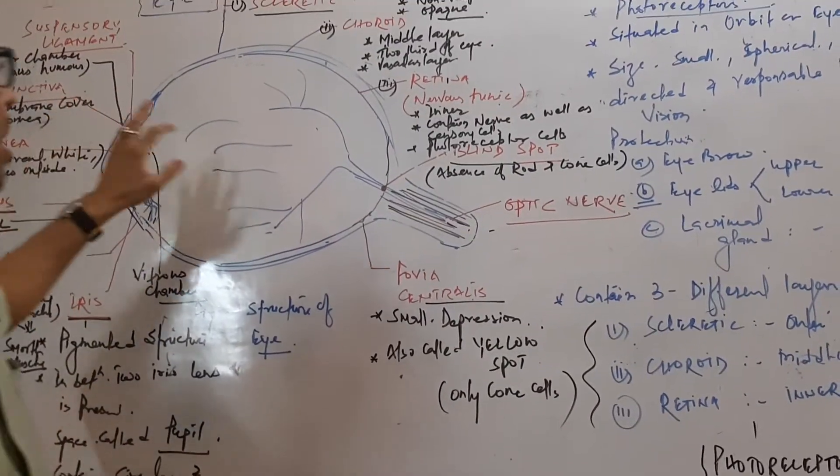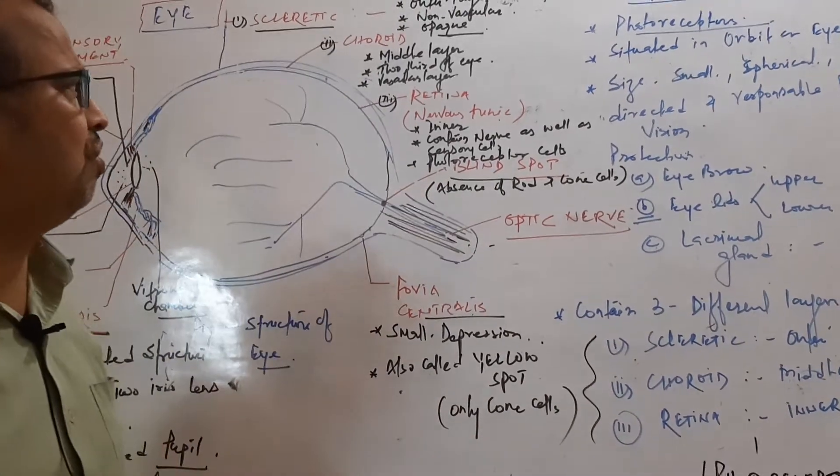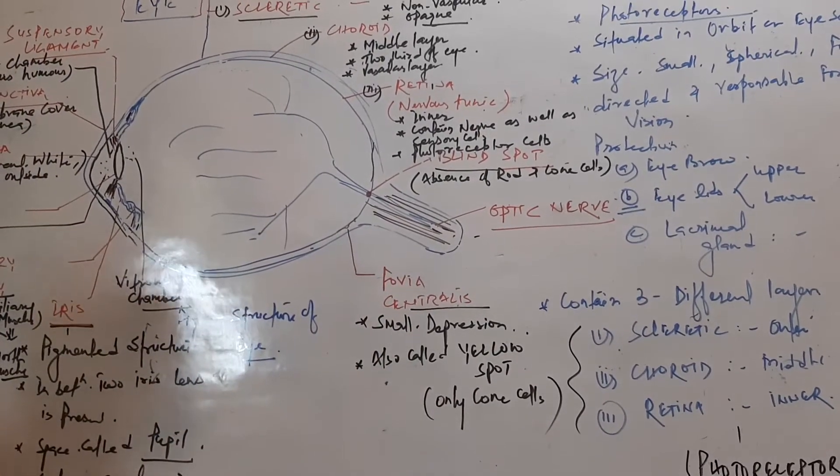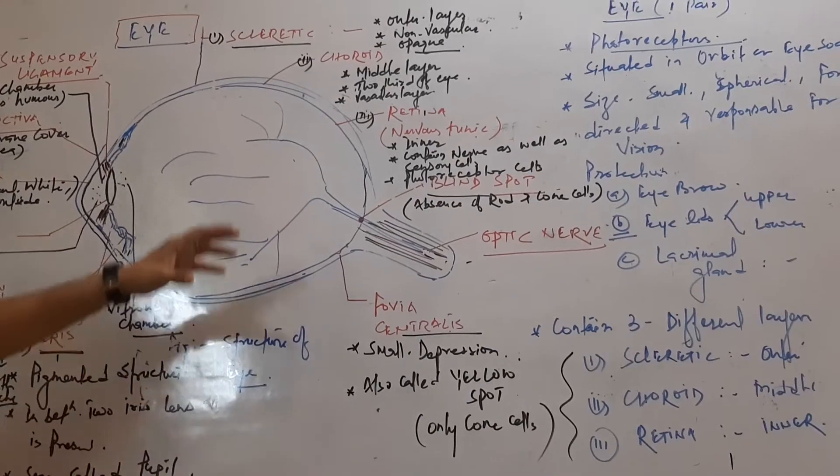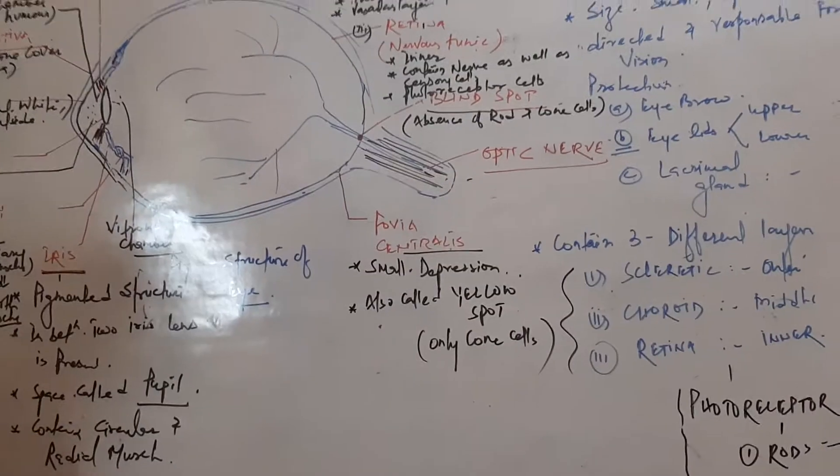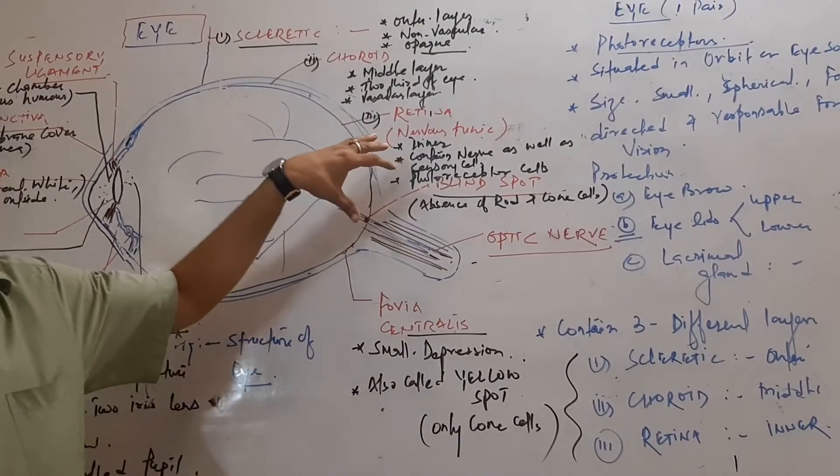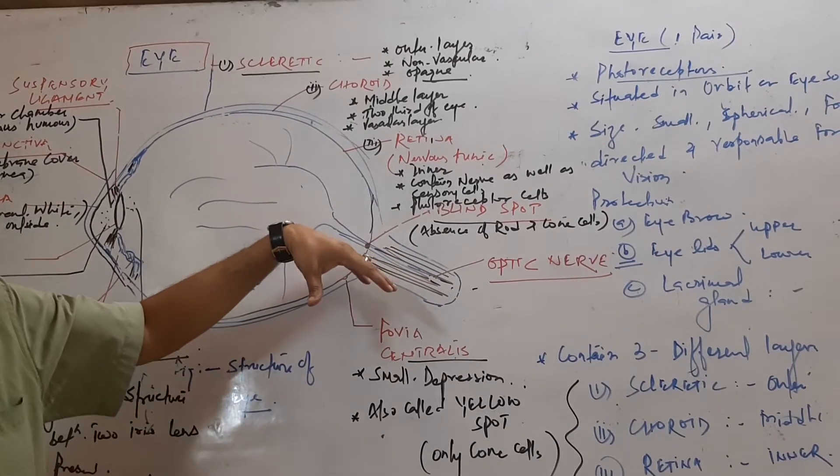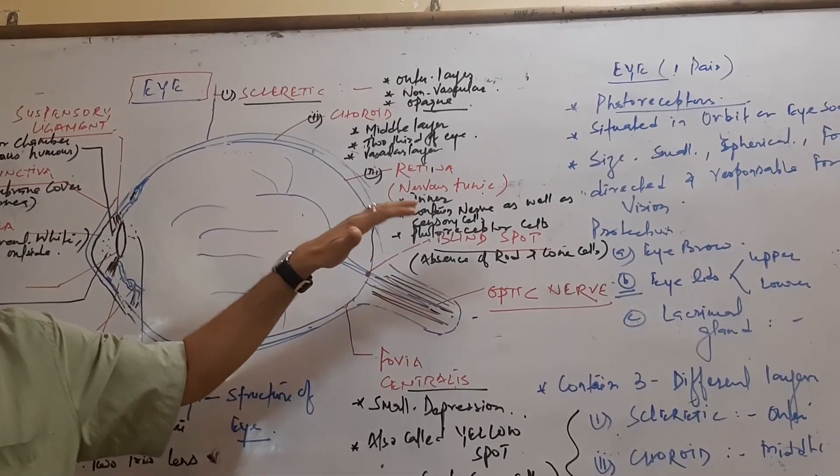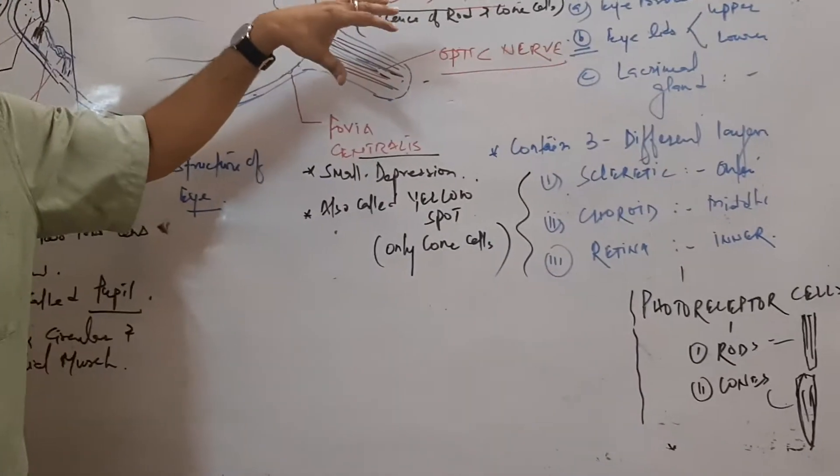Now we come to the inner structure, which is called retina. It is a nervous layer structure which contains both nerve as well as sensory cells, and also contains photoreceptor cells. There are two types of photoreceptor cells: rod cells and cone cells.